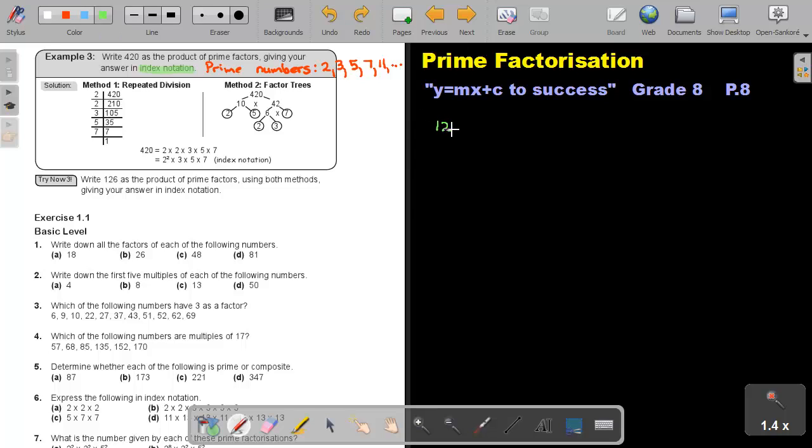Okay. I'm going to take 126 and I'm going to do prime factorization with 126. And I'm going to start with the method repeated division. Okay. Don't forget that we are using our prime numbers as divisors. So, start with 2. If I say 126 divide by 2, I will get 63.